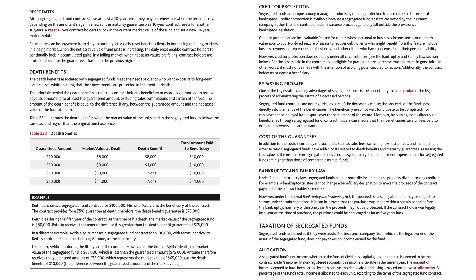Bankruptcy and family law. Under federal bankruptcy law, segregated funds are not normally included in the property divided among creditors. For example, a bankruptcy trustee cannot change a beneficiary designation to make the proceeds of the contract payable to the contract holder's creditors. However, under the Federal Bankruptcy and Insolvency Act, the proceeds of a segregated fund may be subject to seizure under certain conditions. If it can be proven that the purchase was made within a certain period before the bankruptcy, normally within one year, the proceeds may not be protected. If the contract holder was legally insolvent at the time of the purchase, the purchase could be challenged as far as five years back.